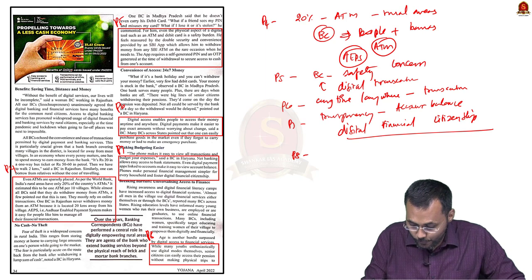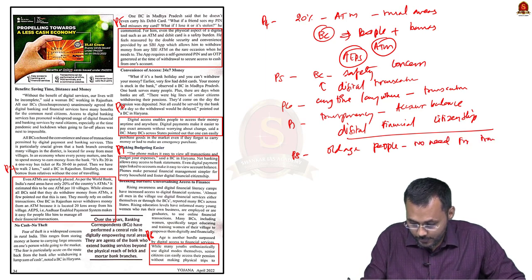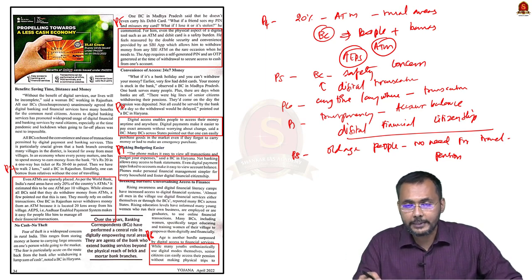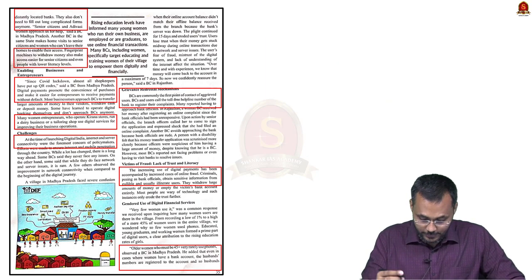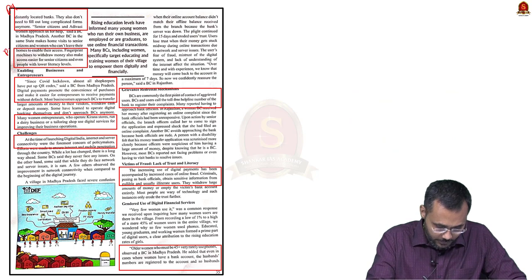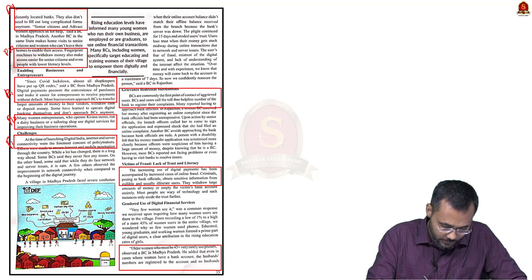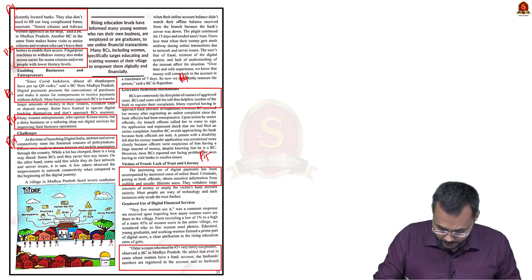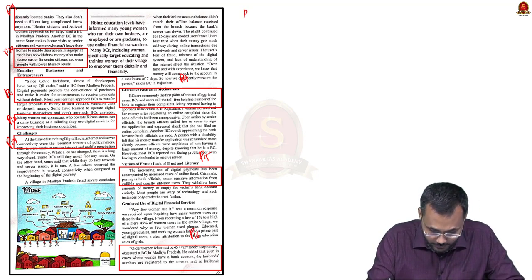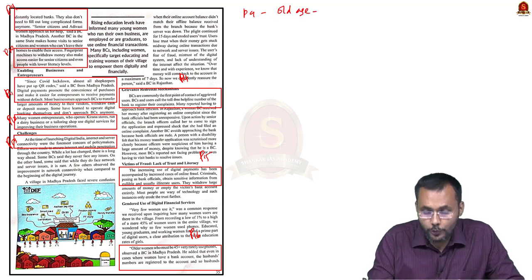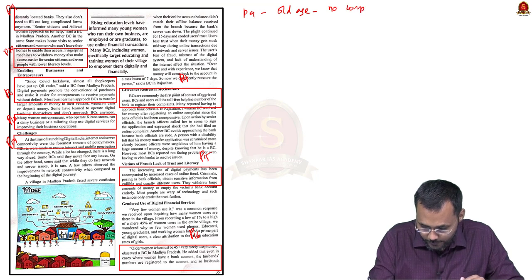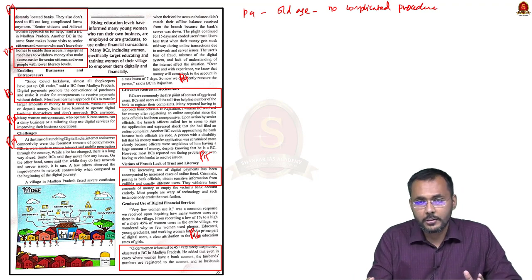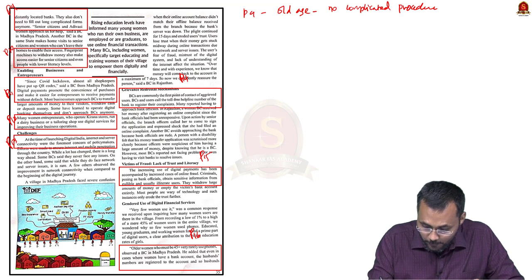Paragraph 8 highlights that banking correspondents especially help old age people by eliminating the need for physical trips to the bank, particularly for pensions. Paragraph 9 notes there is no requirement to follow complicated procedures, as everything is based on digital transactions and Aadhaar-enabled systems. A foolproof system is in place — fingerprints are required for transactions — resulting in secure transactions.